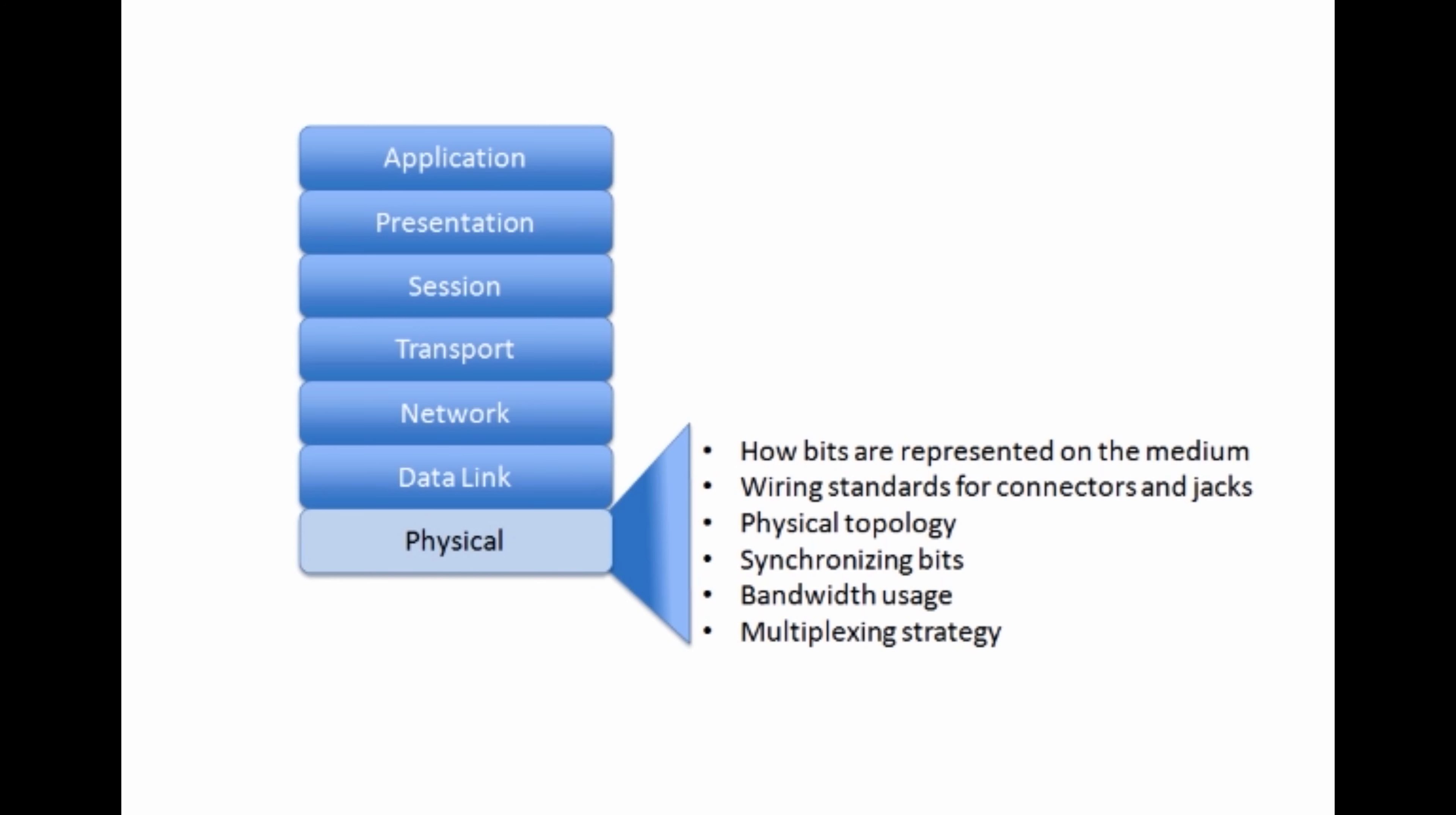Bandwidth usage, that's a physical layer component. And here we're talking about the distinction between broadband and baseband. Broadband is a lot like your cable TV, where you have different frequency ranges, different channels essentially, that carry different transmissions. You can tune in to different channels by tuning in by listening to different frequency ranges. That's broadband.